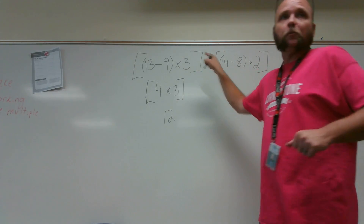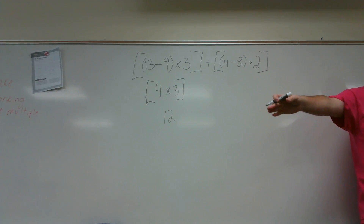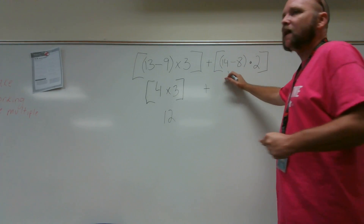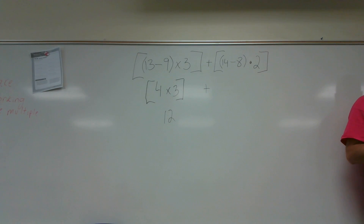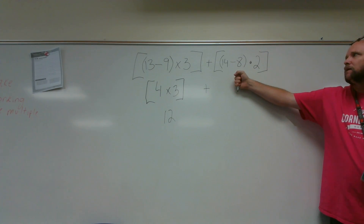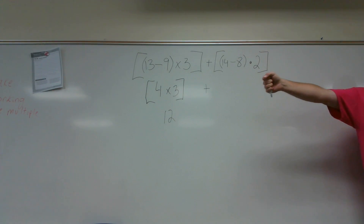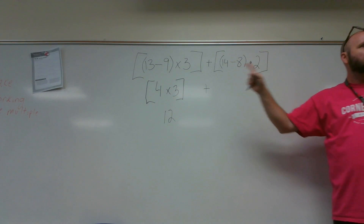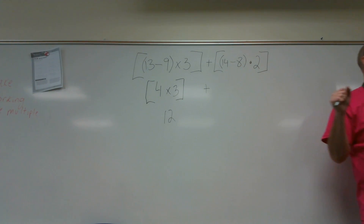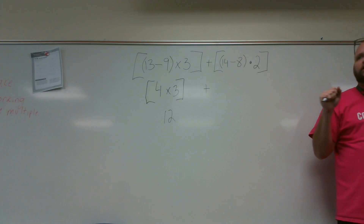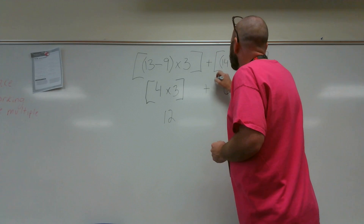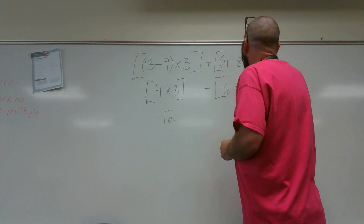Now I'm done with that grouping symbol — done with my brackets, done with my parentheses. I go to my next grouping. Oscar, in this bracket, what would I do first? I do inside the parentheses first — subtract. Oscar, what's the difference of 14 and 8? 6. So I have 6 multiplied by 2.